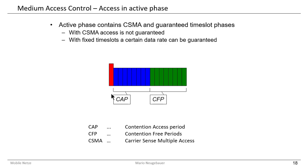In a minute I will explain how this competition algorithm takes place in each reduced function device. After the contention access period there is the contention free period. The coordinator tells all surrounding reduced function devices if such a period exists, and if so, the devices know there are dedicated slots for communication in which no collisions can occur.